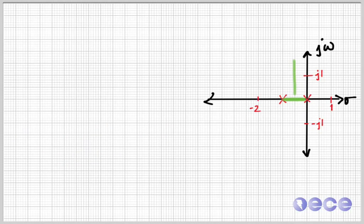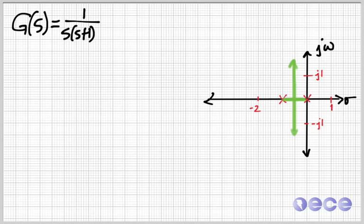So just as a reminder, this is what the root locus looks like for the closed loop system here. So this is the open loop root locus. So as we increase k, we're going to be moving the poles together until they split apart.